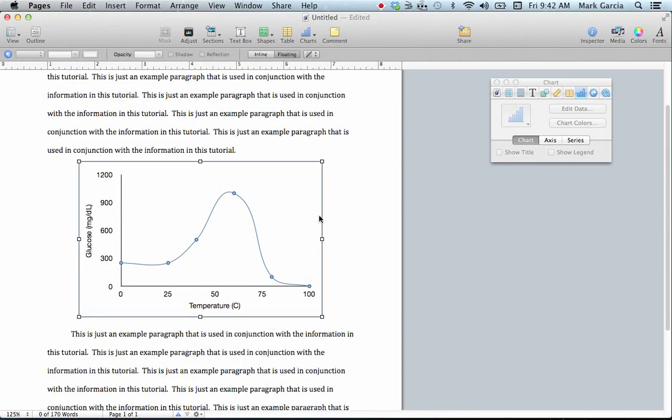So they're grouped. If I want to ungroup them, I can press Command, Option, Shift, and G. And that ungroups them. So Command, Option, G groups them.